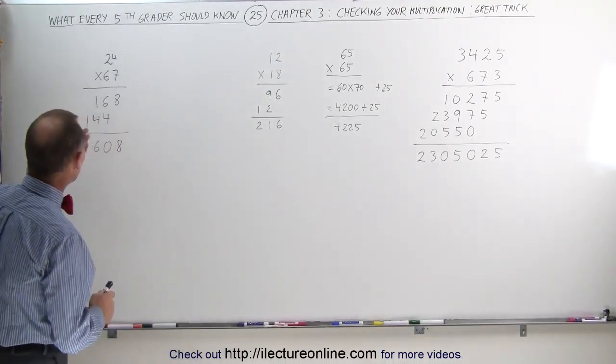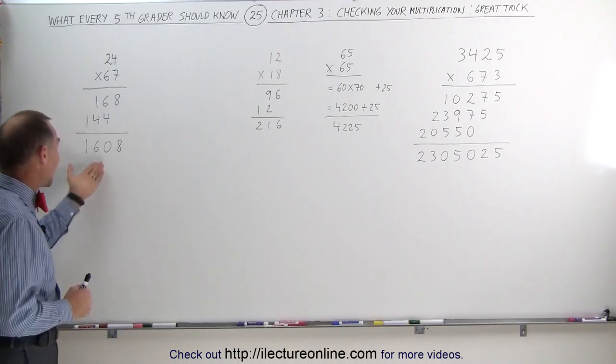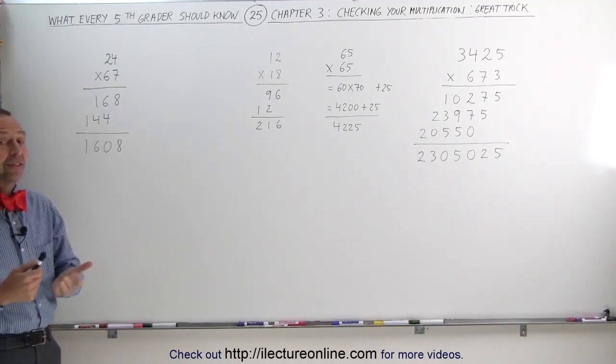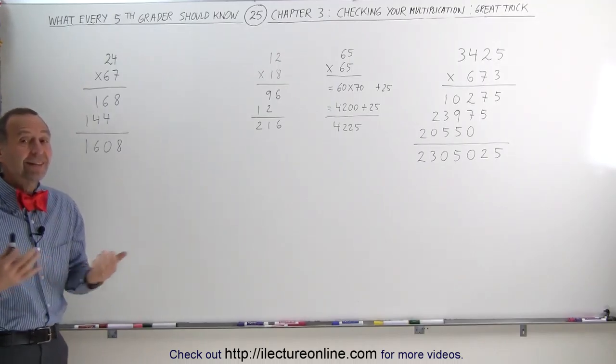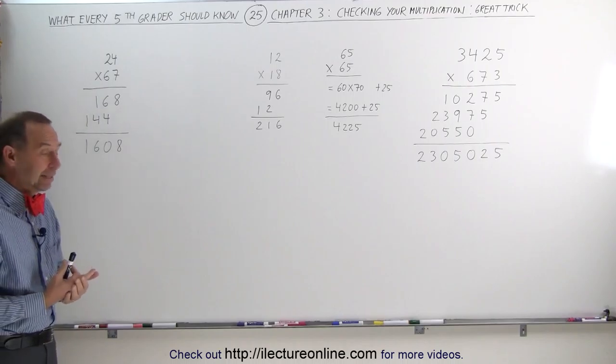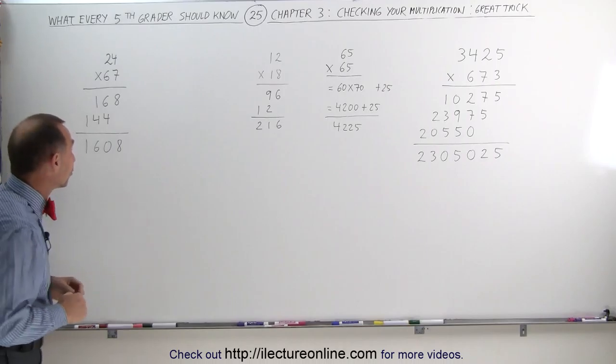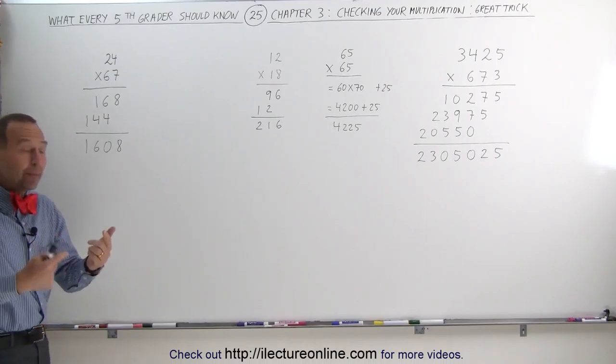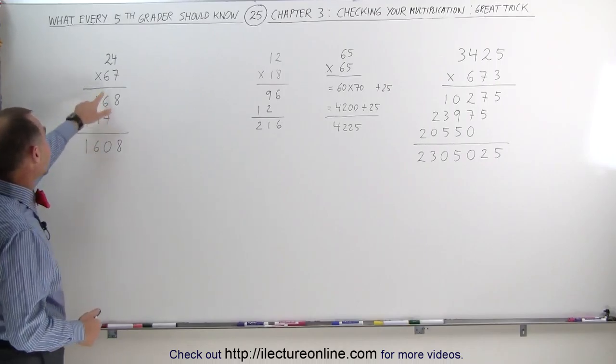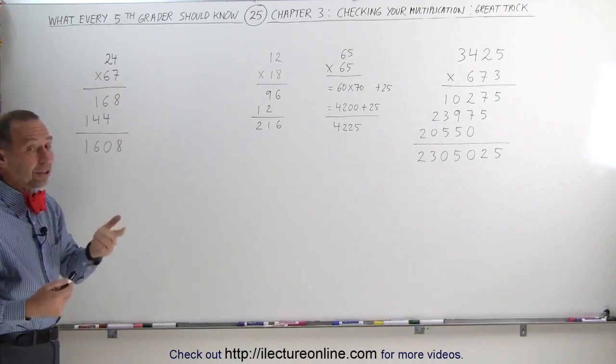Let's say we have the multiplication 24 times 67 and we got the result of 1,608. The question is, is that correct? And if you're going to check it, just like my wife used to check it when she was a young girl in school, they would reverse the problem.